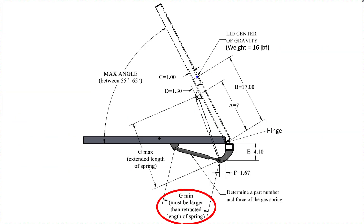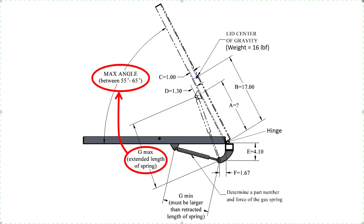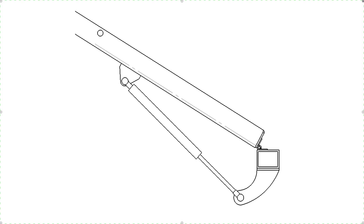When the toolbox lid is completely closed, the gas spring must not yet be fully compressed — that way we are assured that the lid can close fully. The extended length of the gas spring defines how far the lid can open. We want to make sure that the lid can open wide enough to conveniently access everything inside the toolbox, which means it needs to open at least 55 degrees but no more than 65 degrees. This is a zoomed-in view of the toolbox lid. We will have to do a force analysis to determine a value for dimension A, which will allow this spring to work correctly.